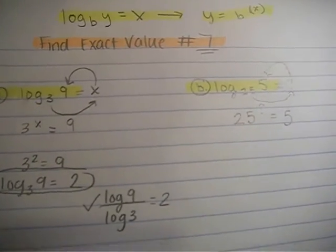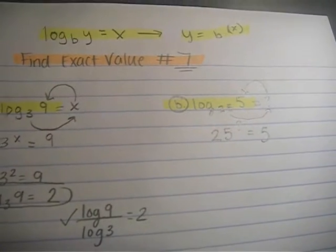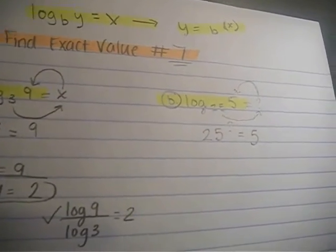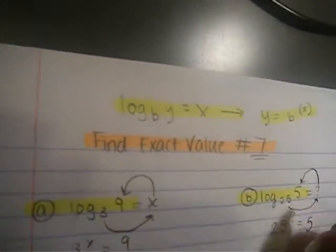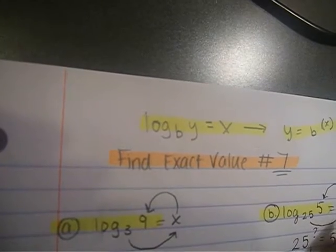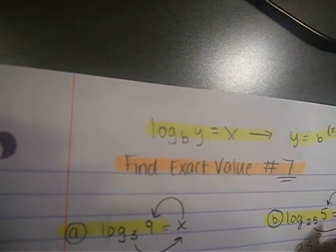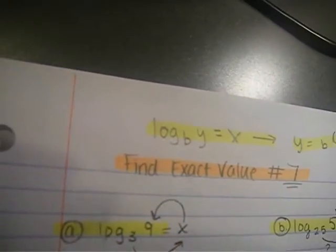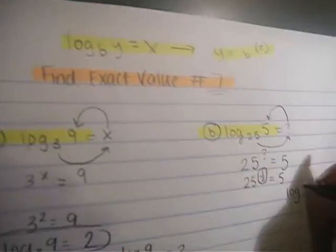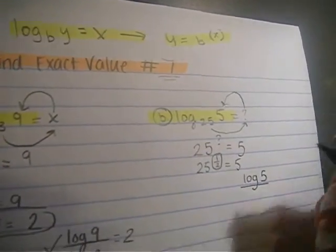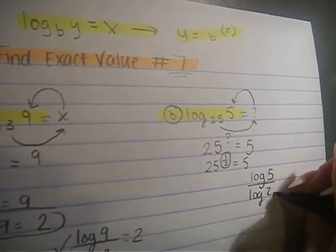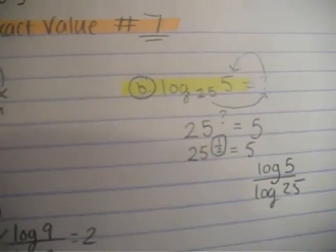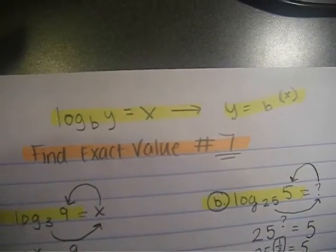Now we know it's not a negative because negatives actually give you fractions. So what raised to 25 equals 5? The answer for this is 1 half. And once again you can check this by going log 5 divided by log of 25. And it does turn out to be 1 half, which is 0.5 in your calculator.